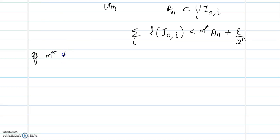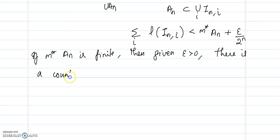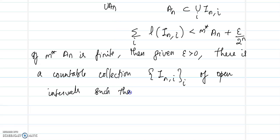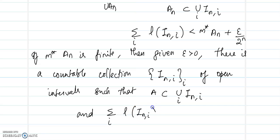So, if M*(Aₙ) is finite, then given epsilon greater than 0, there is a countable collection — a sequence of open intervals indexed by i — such that Aₙ is contained in the union over i of Iᵢₙ, and the summation of l(Iᵢₙ) is less than M*(Aₙ) + ε/2ⁿ.